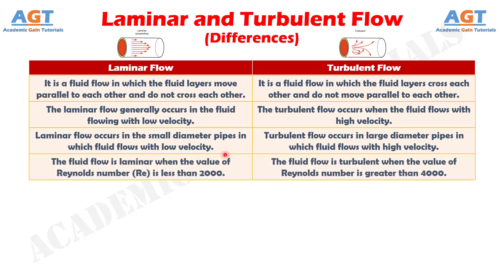Number 4. The fluid flow is laminar when the value of Reynolds number is less than 2000, whereas the fluid flow is turbulent when the value of Reynolds number is greater than 4000.